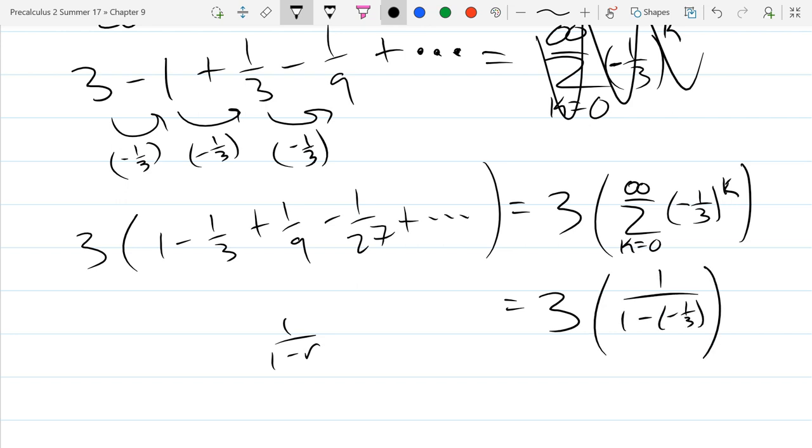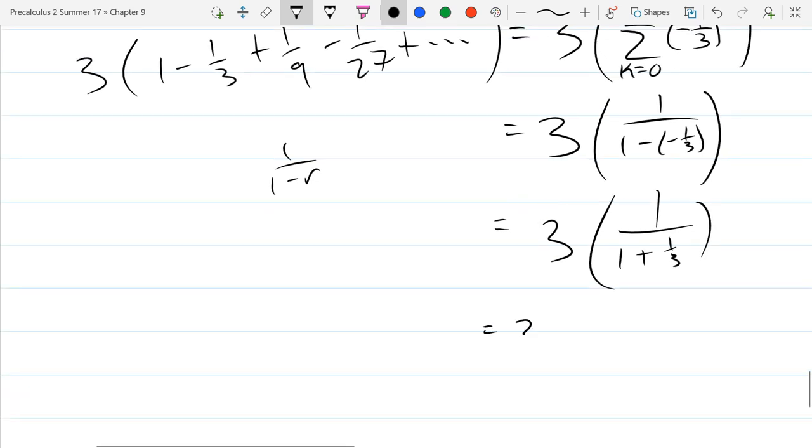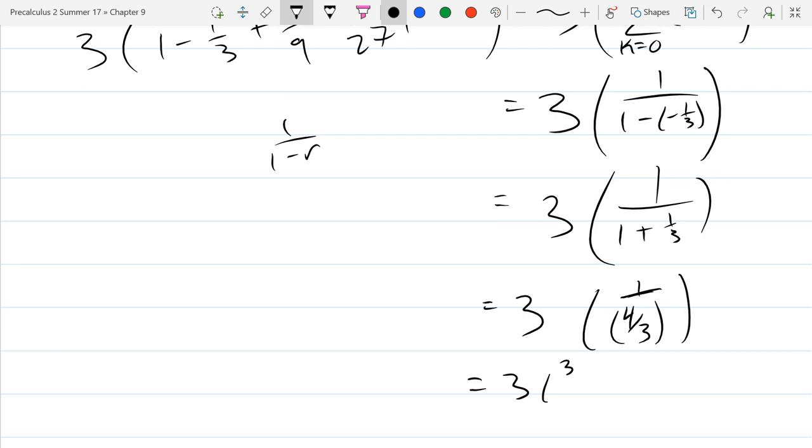So I have to be careful - there's two negatives in a row which means add. So 1 plus 1 third is 4 thirds. And the reciprocal is 3 fourths. There we go, and that is our summation here.